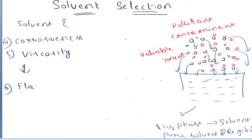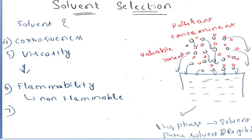The next criteria is flammability of the solvent. The solvent which we are handling should be non-flammable, because flammable liquids may cause fire and explosions. To avoid such hazards, we require a solvent which is a non-flammable liquid. The seventh criteria to be followed is toxicity. Simply, the solvent which we are handling should be non-toxic — it should not harm either the environment or the human beings handling that separation process or operation.